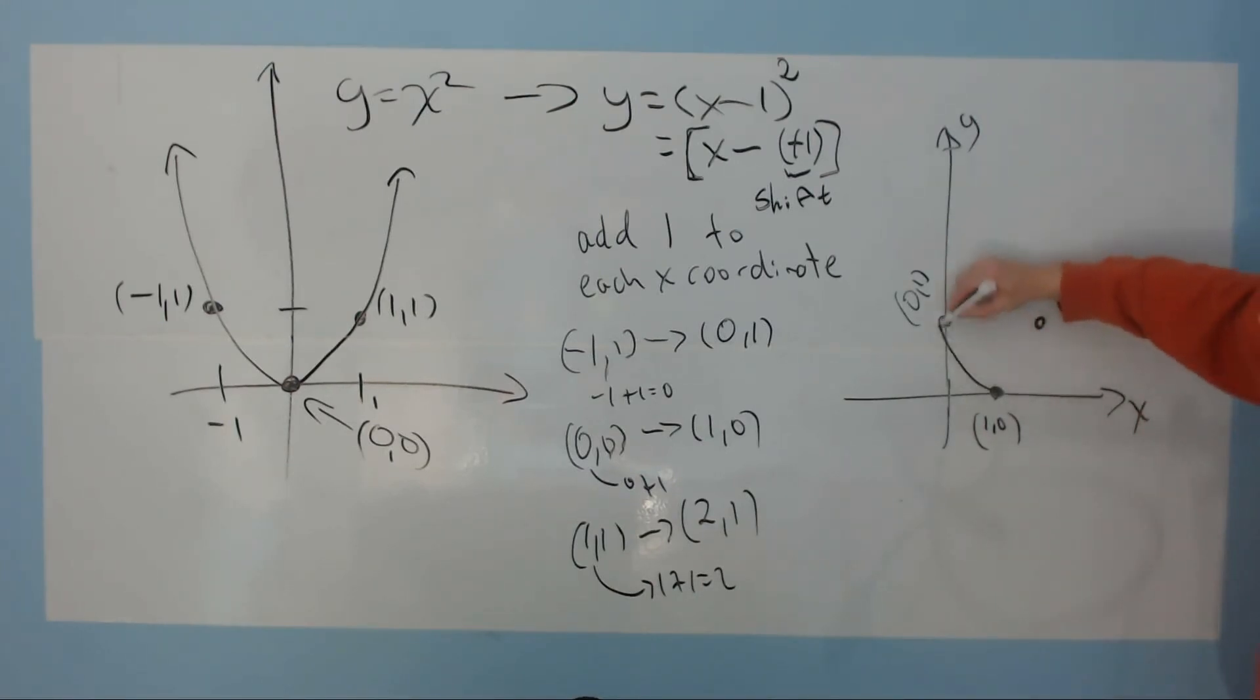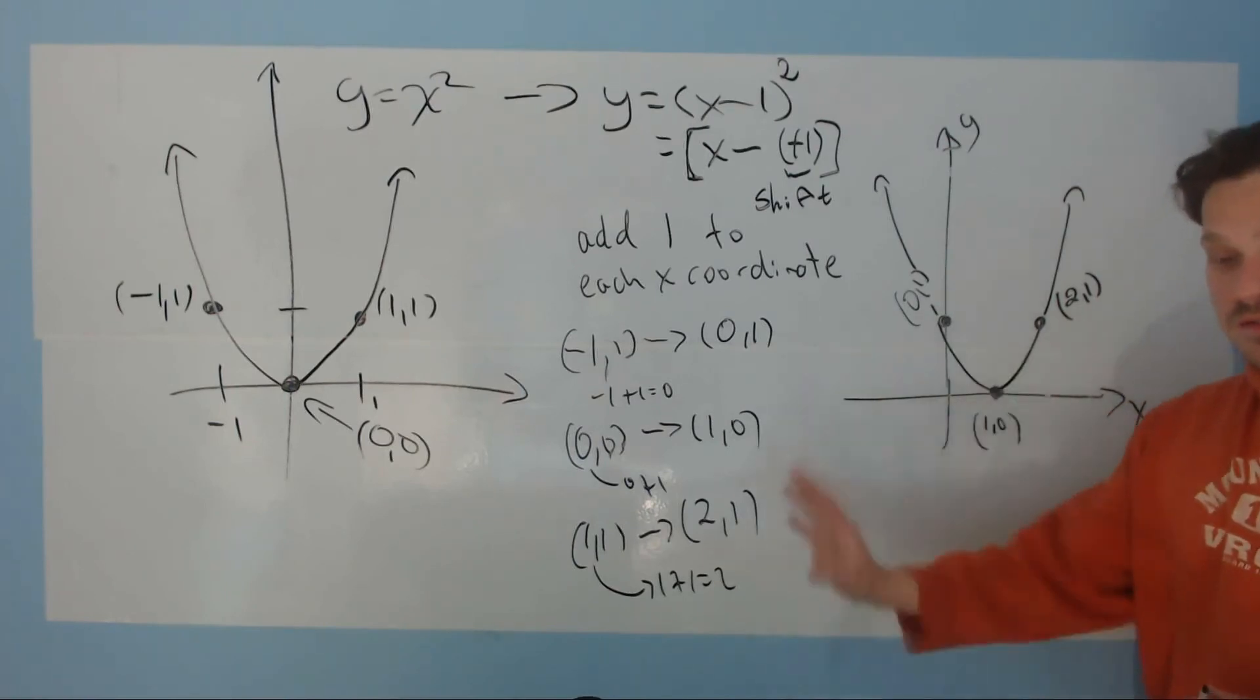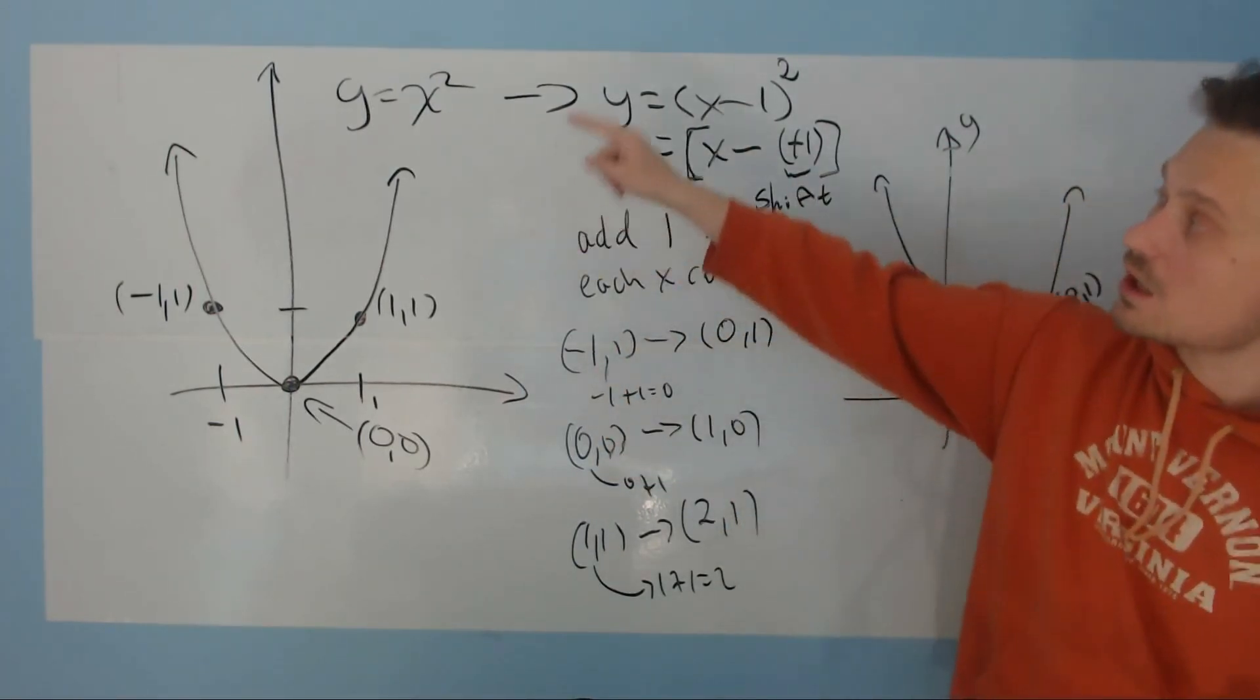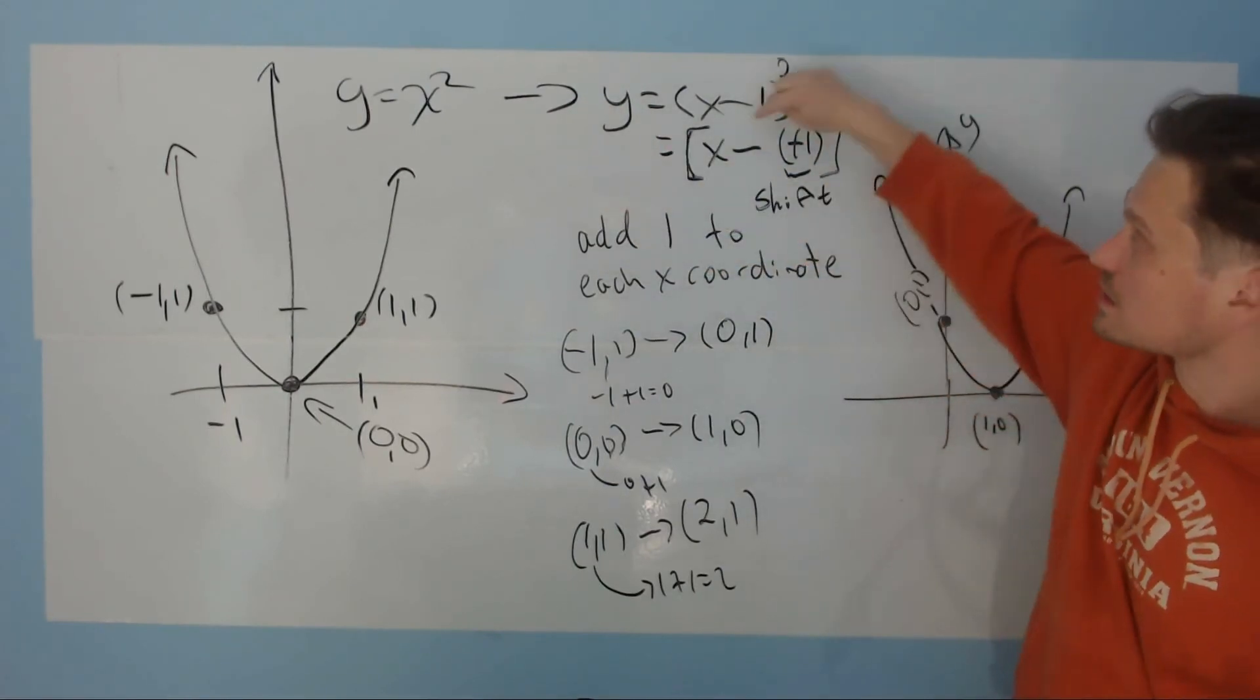And then you just connect this to make a parabola. Shape overall is not changed. It's very important to remember that when you do a transformation like this, from left to right, when you go from y equals x squared to y equals x minus 1 squared,